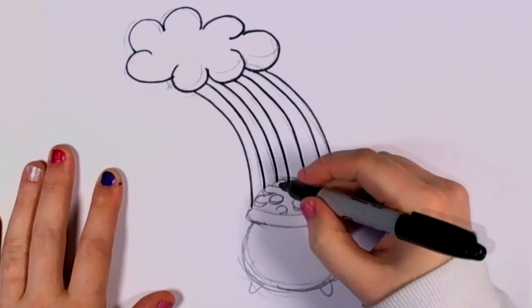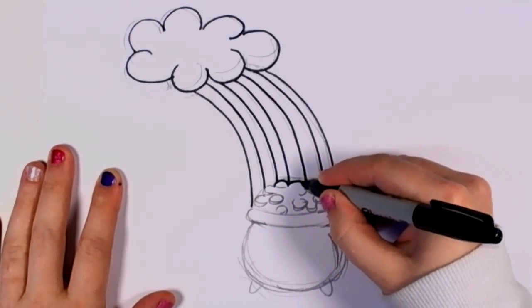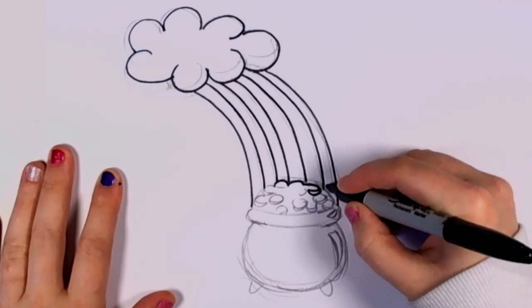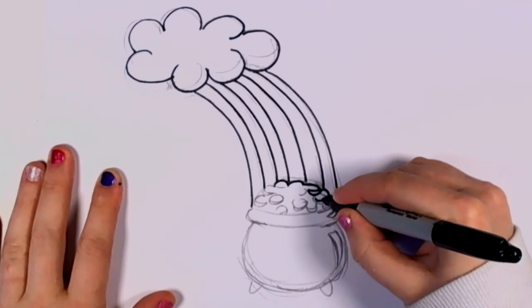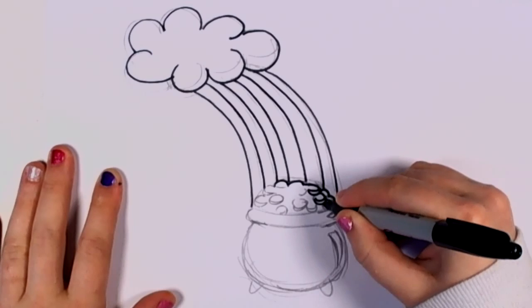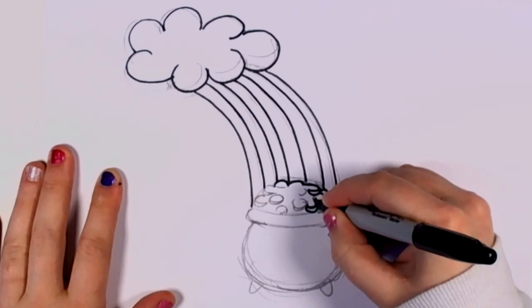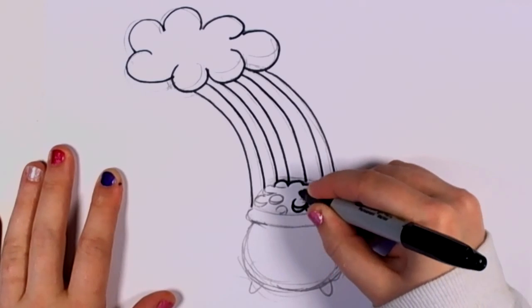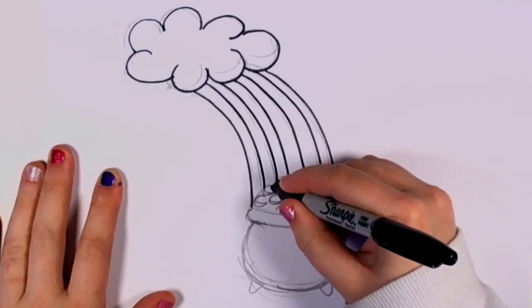Next, outlining the gold coins, that pot of gold. And again, while you're outlining, just think of little crescent moon shapes while drawing the edge of the coins.